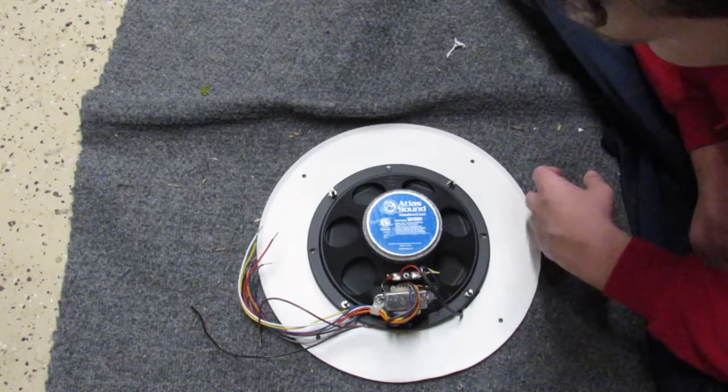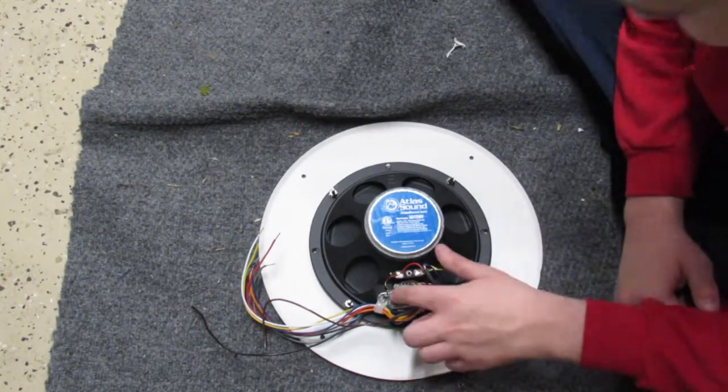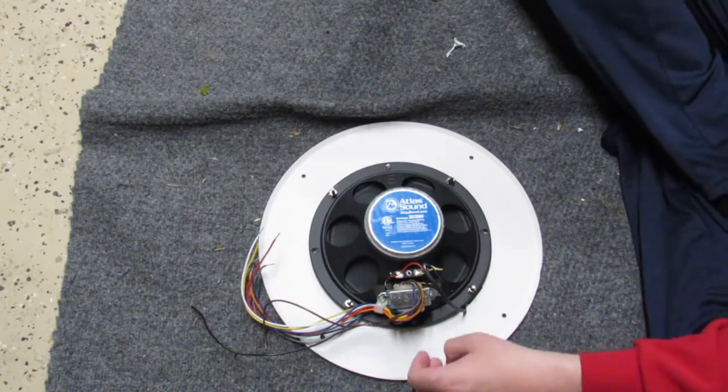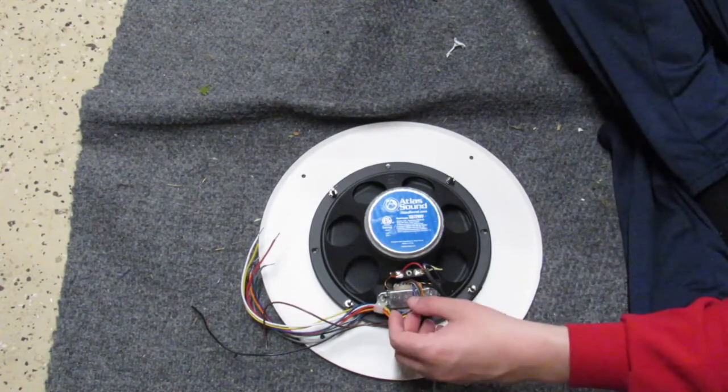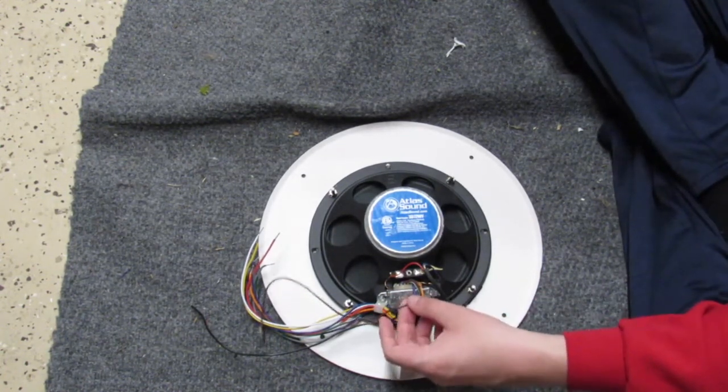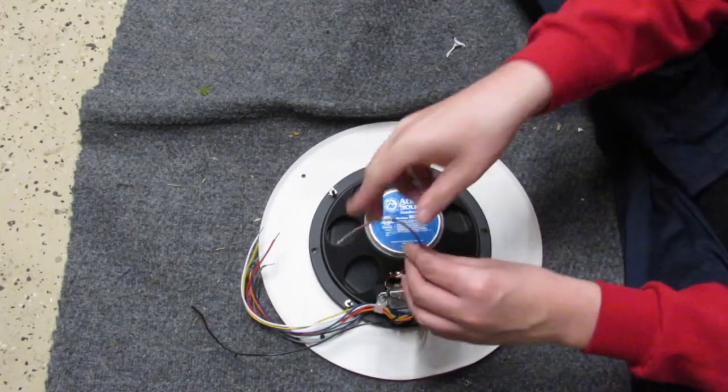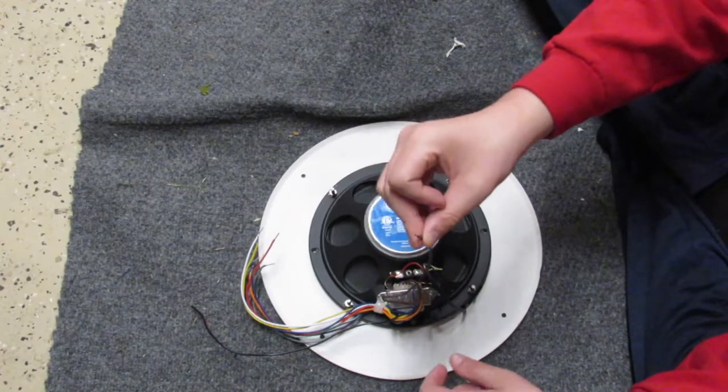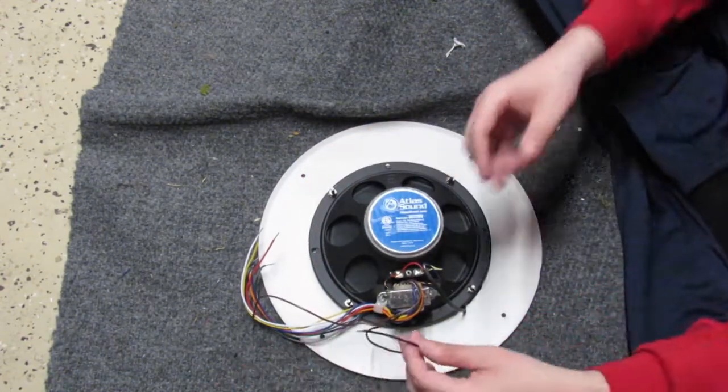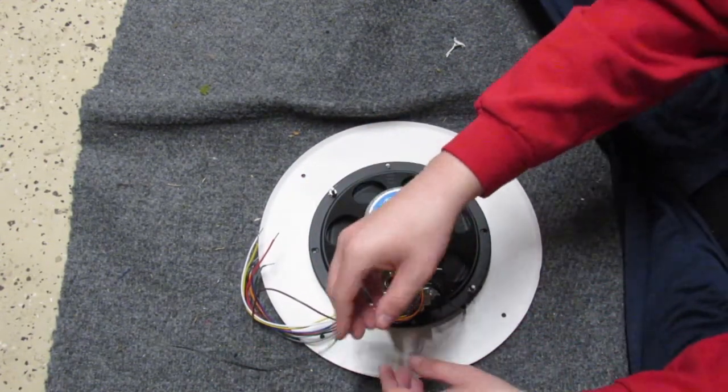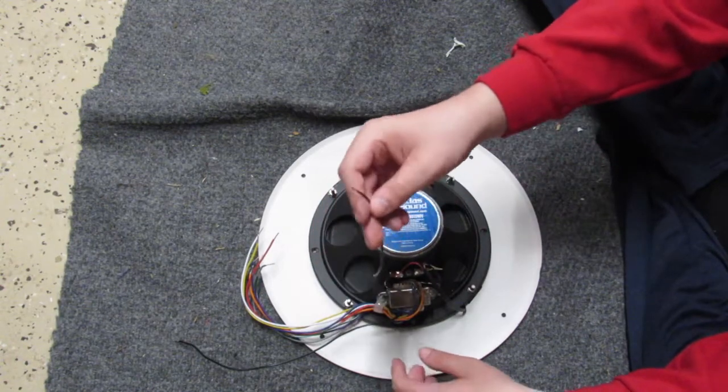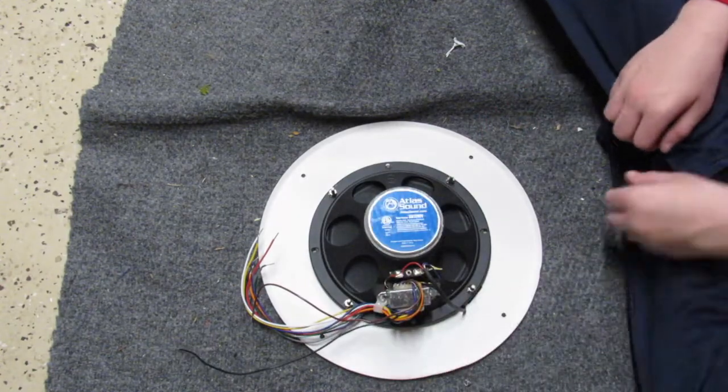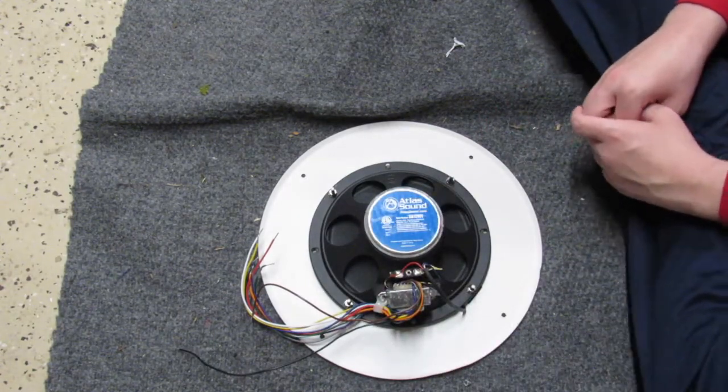So, as you can see, here's the 70 volt transformer. Now, if you wanted to tap it at the maximum, which is 5 watts, you take the brown wire, which is your hot, and then this is your common. So, 5 watts, 70 volts, and then your common wire, which is the black. And there is a diagram.